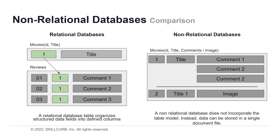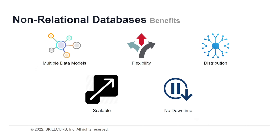NoSQL databases are based on very simple structures like key-value storage or a graph, and do not support such relations. There are many benefits to using non-relational databases. The first is support for multiple data models. Relational databases require data to be put into tables and columns to be accessed and analyzed, whereas the various data model capabilities of NoSQL databases make them extremely flexible when handling data. The second major benefit is that they are easily scalable via peer-to-peer architecture.